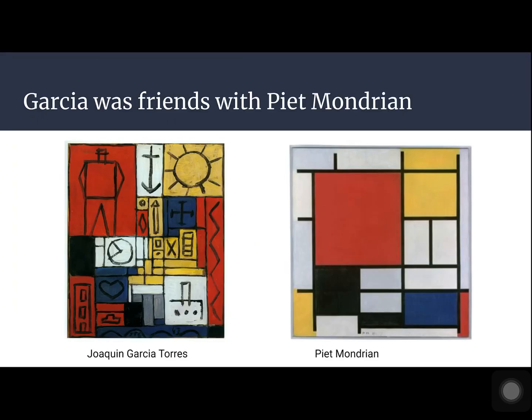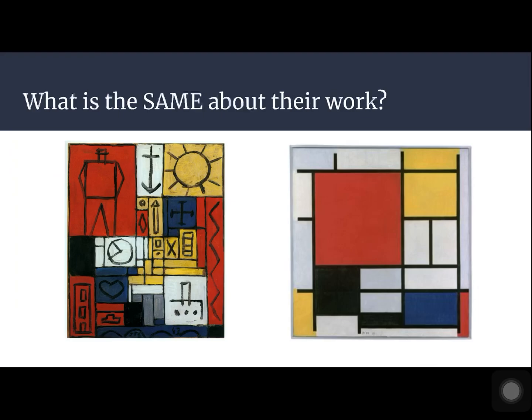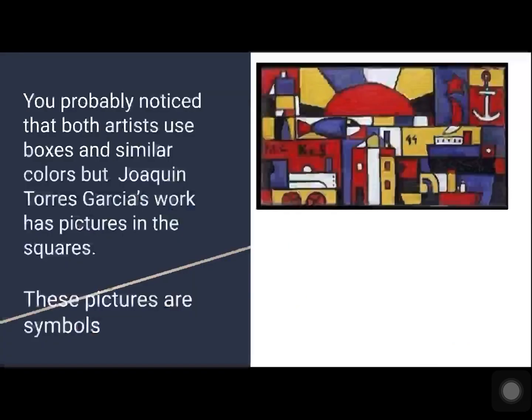Garcia was friends with an artist named Piet Mondrian. What is the same about their work? What is different about their work? You probably noticed that both artists use boxes in similar colors, but Joaquin Torres Garcia's work has pictures in the squares.